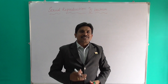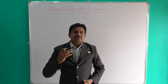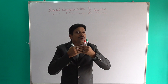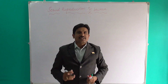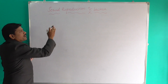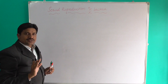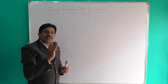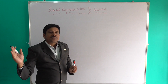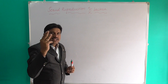Let us discuss sexual reproduction of bacteria. Sexual reproduction is when male and female gametes fuse to form a zygote. However, in bacteria, true sexual reproduction is not present. Instead, genetic material is transferred from one bacterium to another. This is called sexual reproduction of bacteria, which is divided into three types.